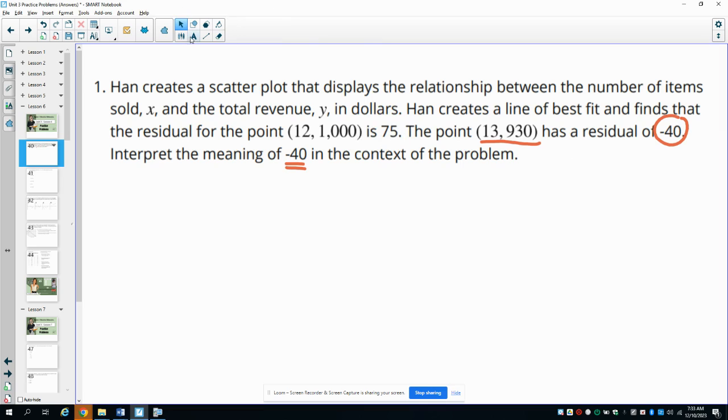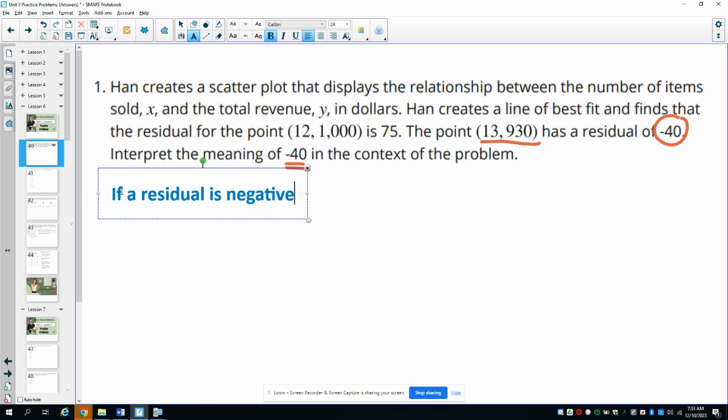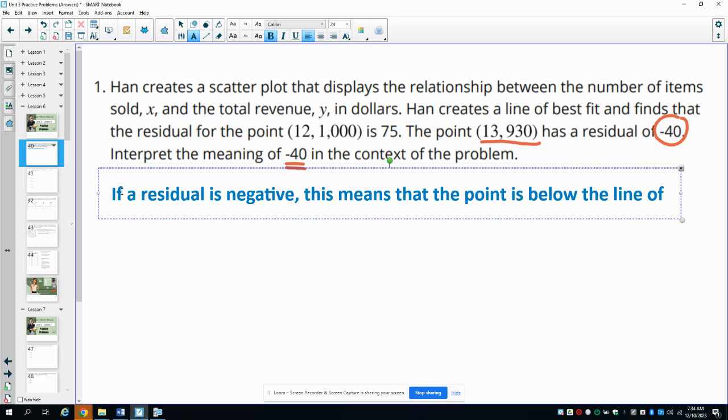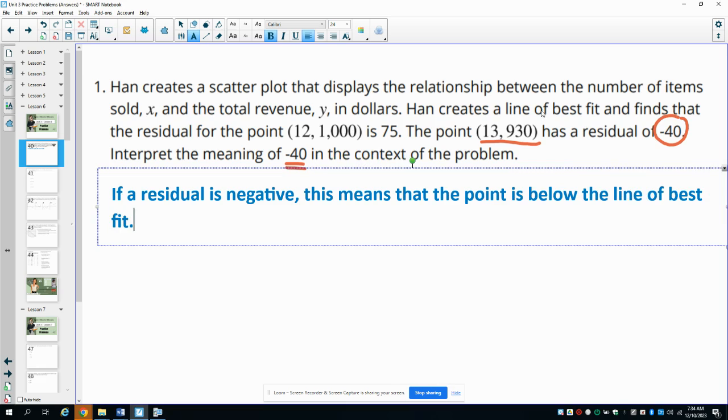This is just getting to what the residuals mean. If a residual is negative, this means that the point is below the line of best fit. Remember that the point is the actual data point and the line of best fit is the estimate. So it really means that the actual value is lower than the predicted value.